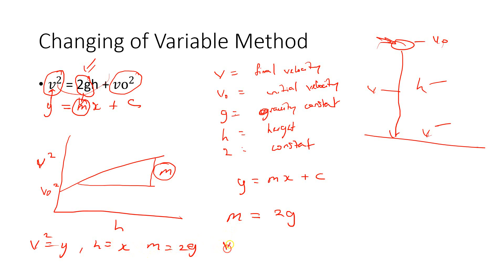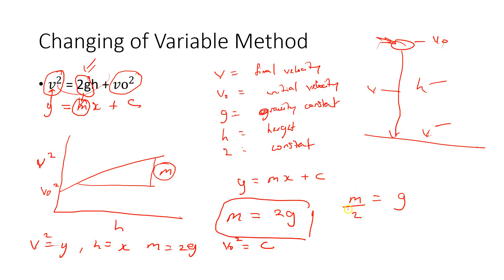Since M is equal to 2G, we can actually find the value of G to prove that G is 9.8. V squared is parallel to Y, and 2G is parallel to M. So M is equal to 2G, which means G is equal to the gradient divided by 2. Whatever your gradient is divided by 2 will determine what G is. So we now have the equation in linear form by just changing the variable. If I plot V squared versus H, I'll get a linear graph. Rather than if I were to plot V versus H, I would not get a linear graph.